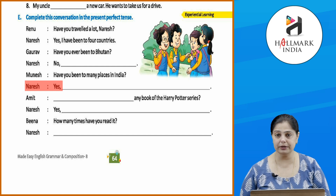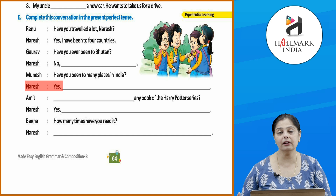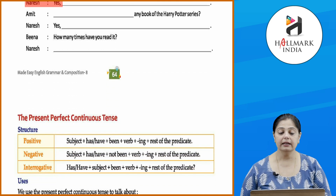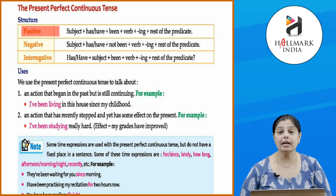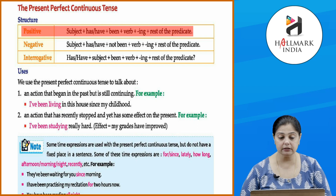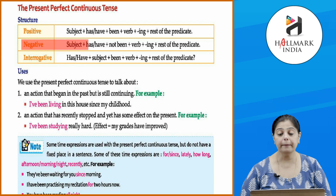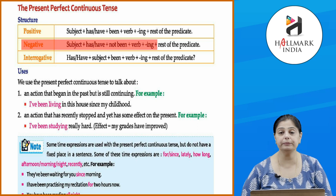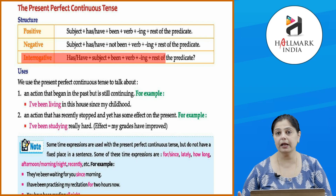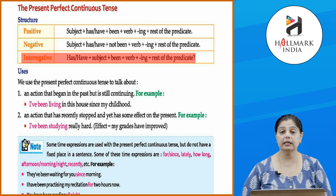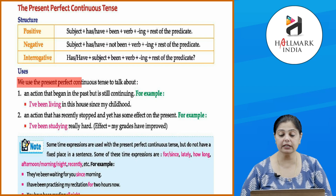Now the present perfect continuous tense — meaning the action is presently happening continuously. Positive: subject plus has/have plus been plus verb plus 'ing' plus rest of the predicate. Negative: subject plus has/have plus not plus been plus verb plus 'ing' plus rest of the predicate. Interrogative: has/have plus subject plus been plus verb plus 'ing' plus rest of the predicate.